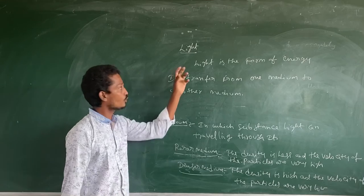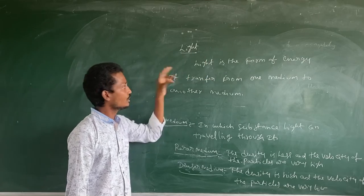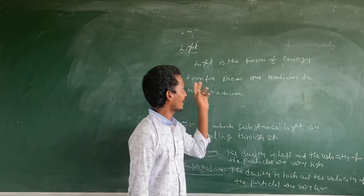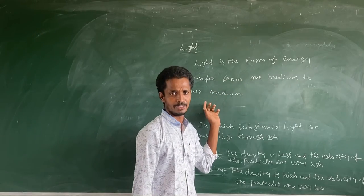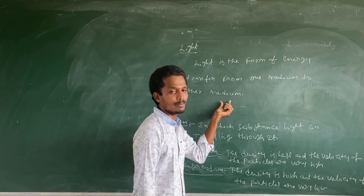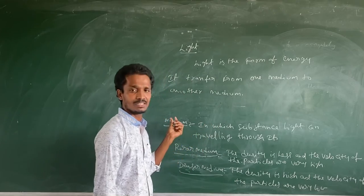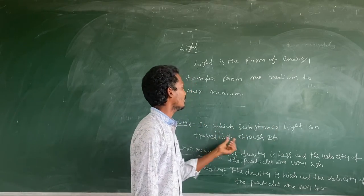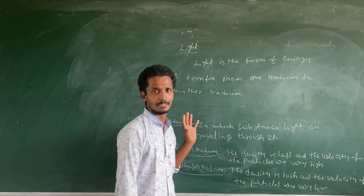First of all, we have to learn about the light. What is the light? Light is the form of energy. Light can travel from one medium to another medium. What is the medium? Medium is the substance in which light can travel through it.